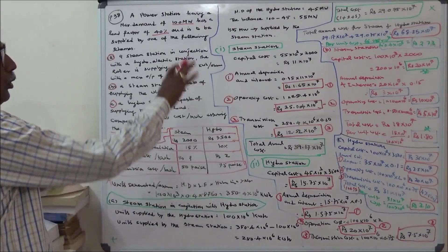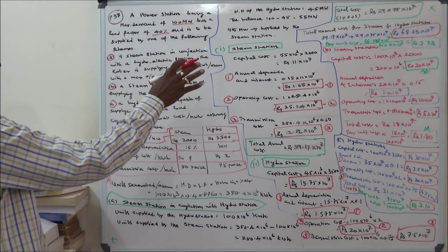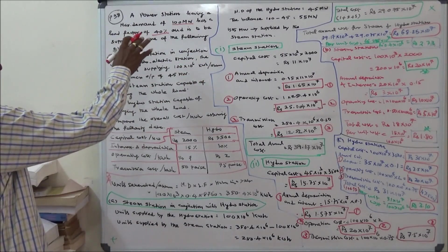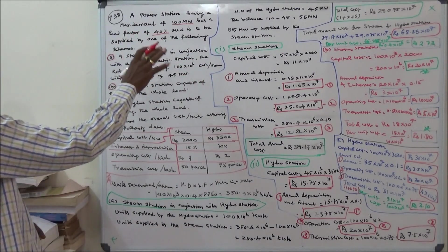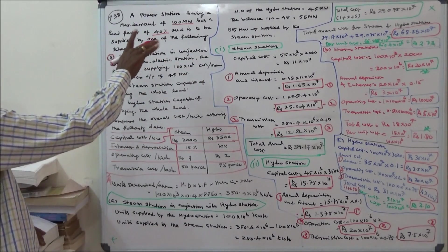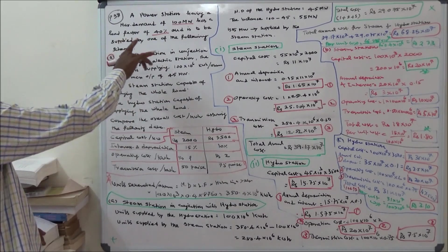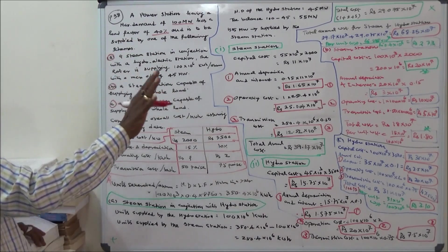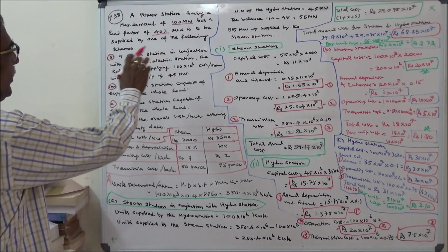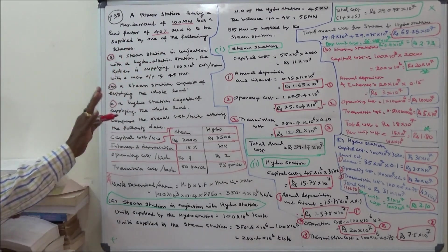This class we work out two problems. The first problem: a power station having a maximum demand of 100 megawatts has a load factor of 40 percentage and is to be supplied by one of the following schemes.